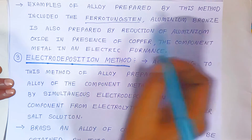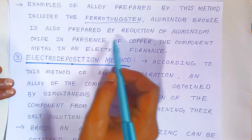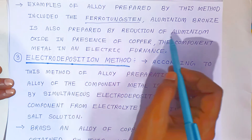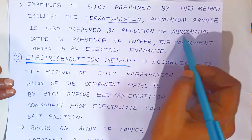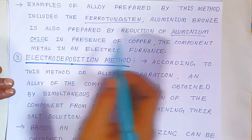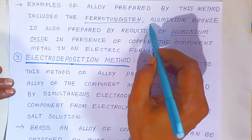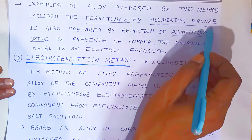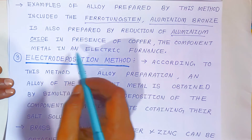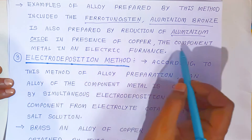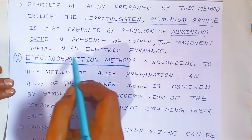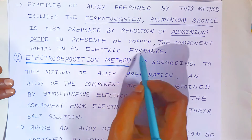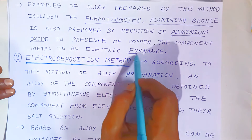Aluminum bronze is also prepared by the reduction of aluminum oxide in the presence of copper as the component metal, carried out in an electric furnace.